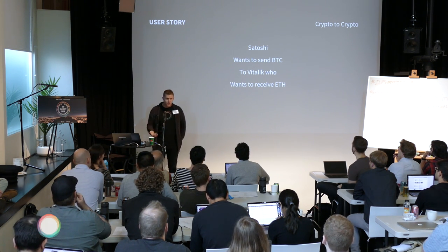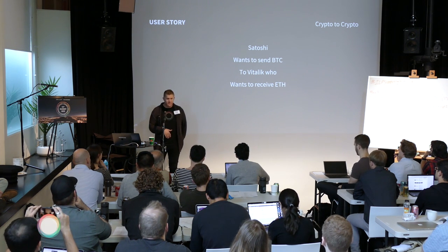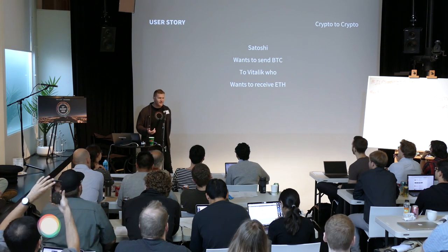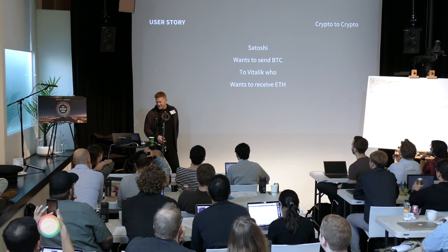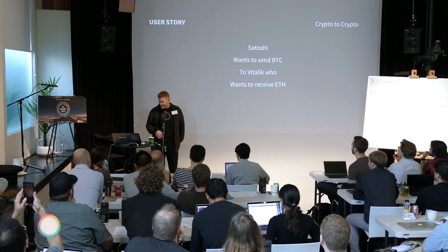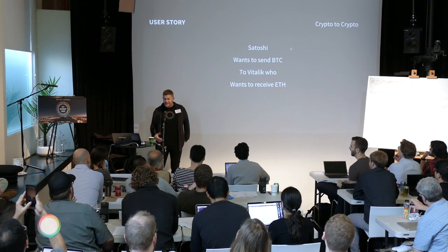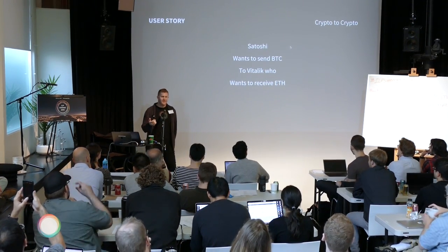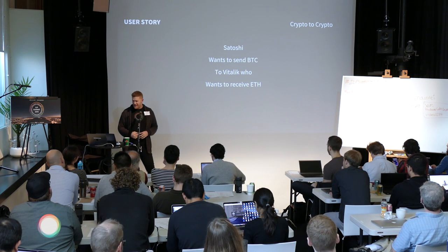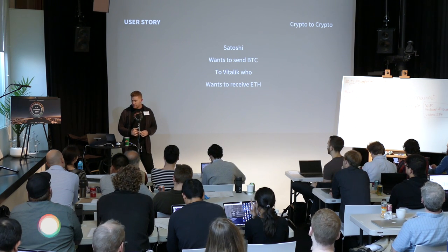I'm going to walk through a few user stories. The first is the classic crypto-to-crypto peer-to-peer payment: Satoshi wants to send Bitcoin to Vitalik, who wants to receive Ethereum. If Satoshi wanted to send someone else Bitcoin and they want to receive Bitcoin, that's great — there's a network for that, and he created it. But it gets a little complex, and Evan talked about a bit of tribalism: when you try to pay another tribe, they get upset and don't necessarily want to accept your altcoin or whatever term they call it. I think ILP can actually do a really good job solving this. The Kava team demonstrated a way to possibly solve this using more of a swap, and I think this is a really interesting user story.